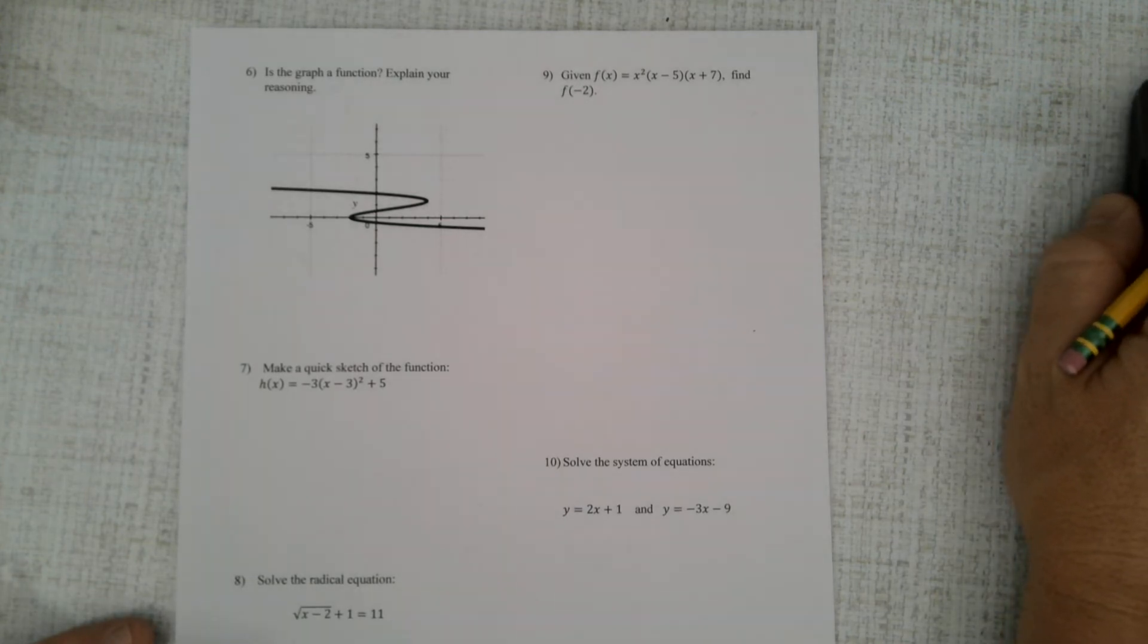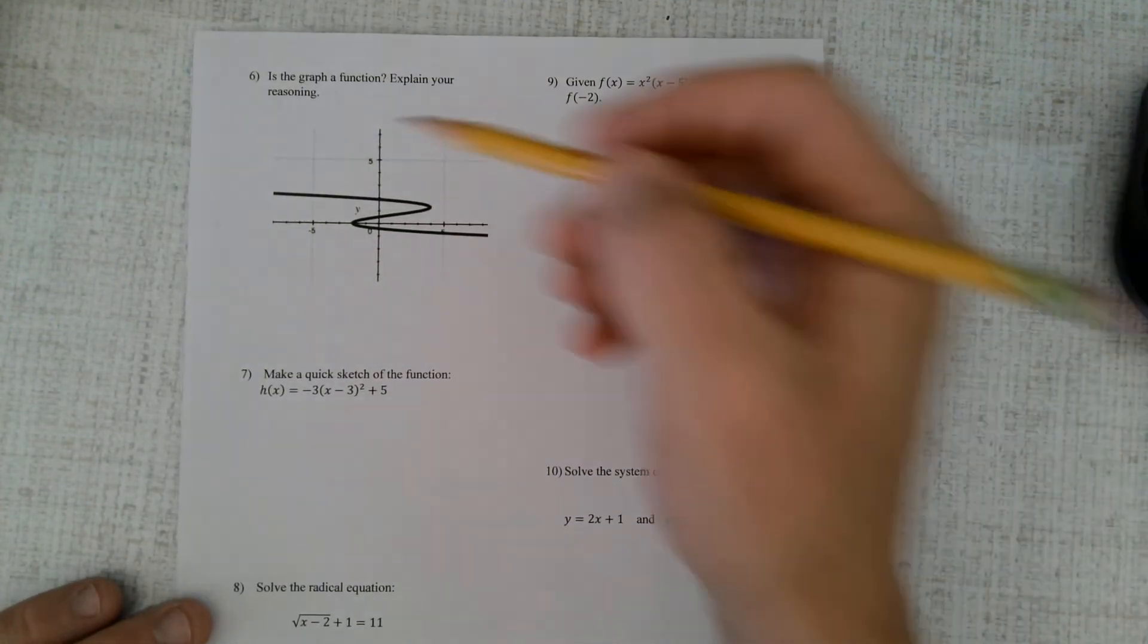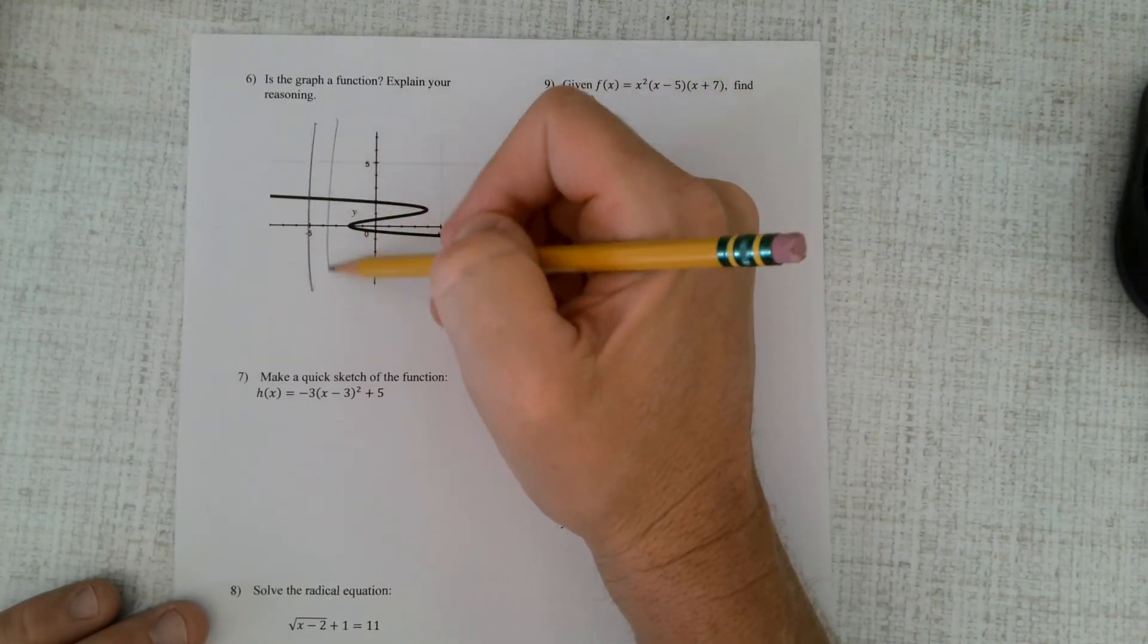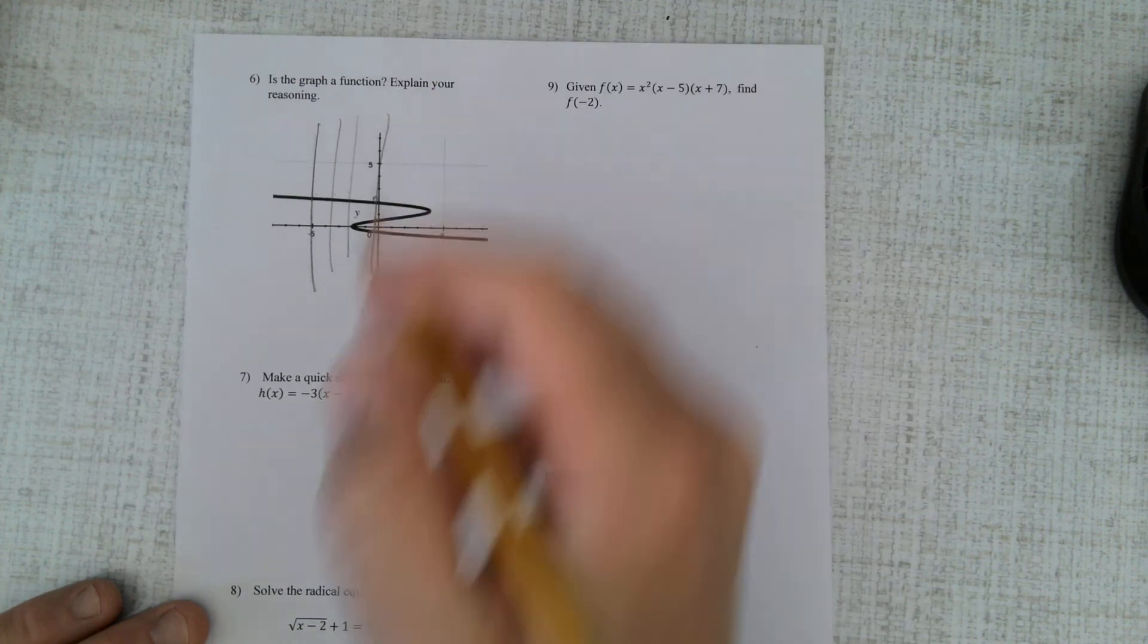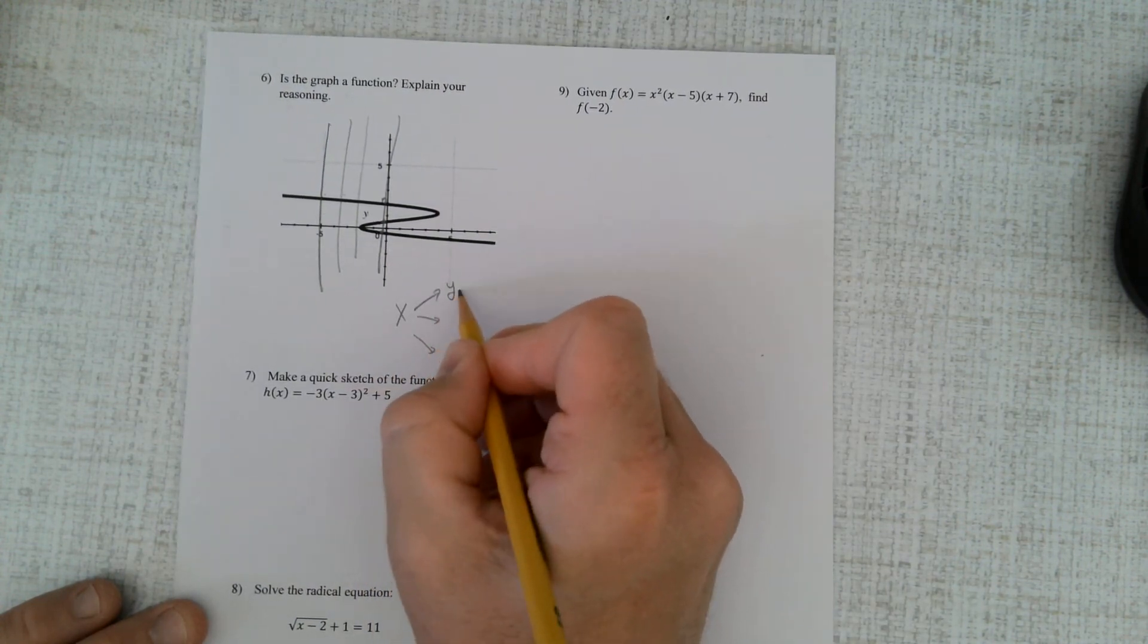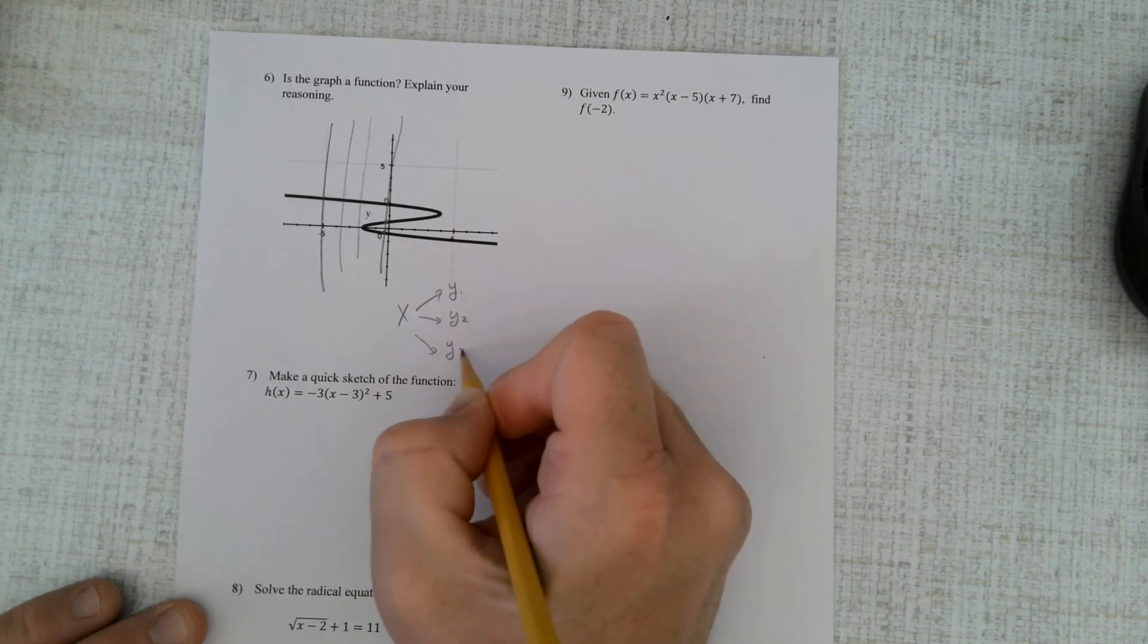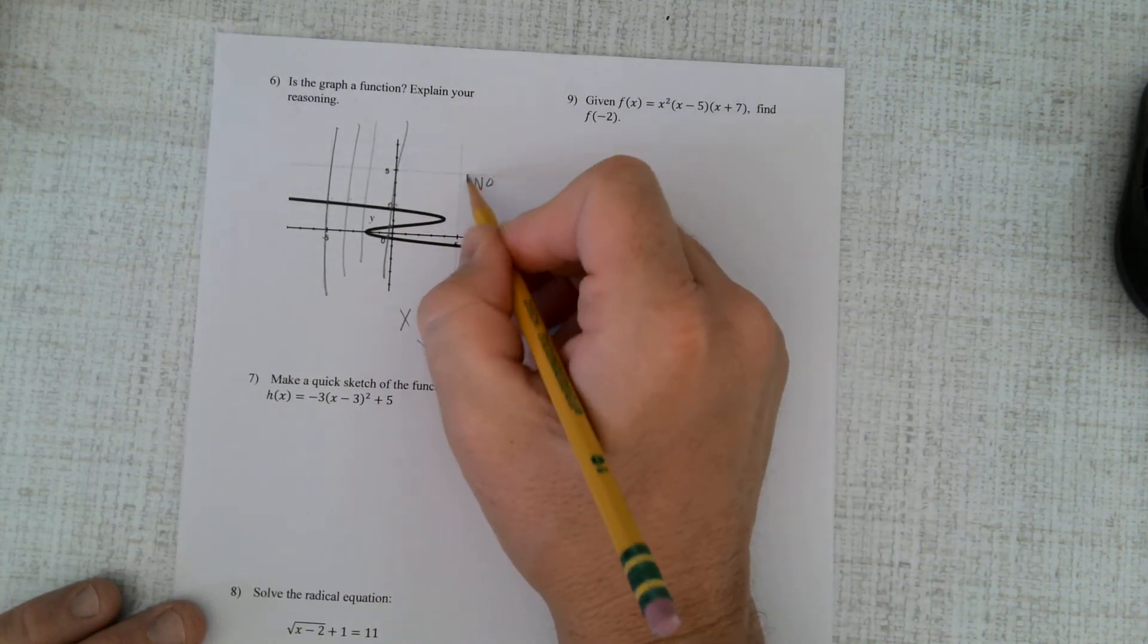Number 6 here. Is this one a function? Well, vertical line test. One value, one value, one value. Whoops. Three values. So this x value is leading to three different outputs. This input has three different outputs. So the answer is no, it's not a function.